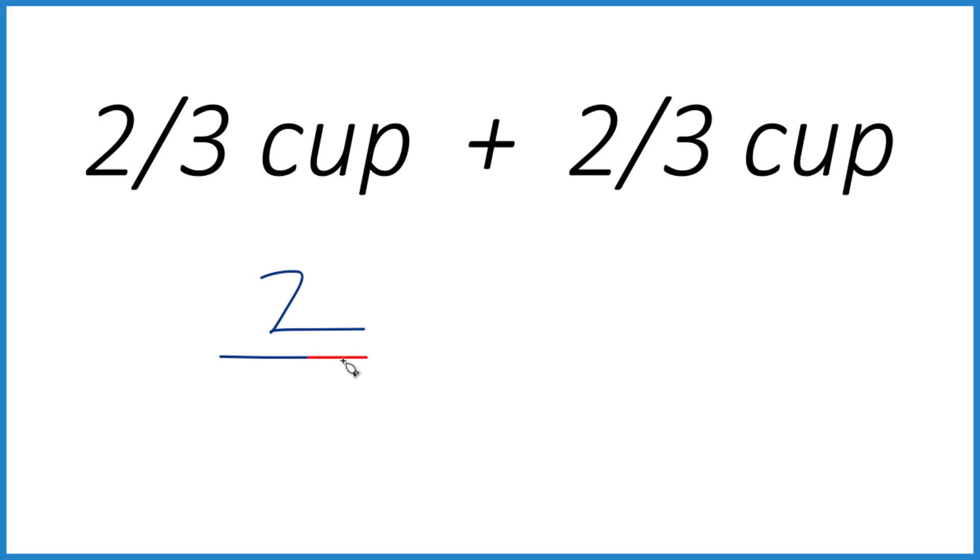So we have 2 thirds plus 2 thirds, and when we have fractions, if we have the same denominator, we're just going to keep that the same, then we add the numerators. So 2 plus 2 is 4, we keep that 3 the same and we end up with 4 thirds of a cup.